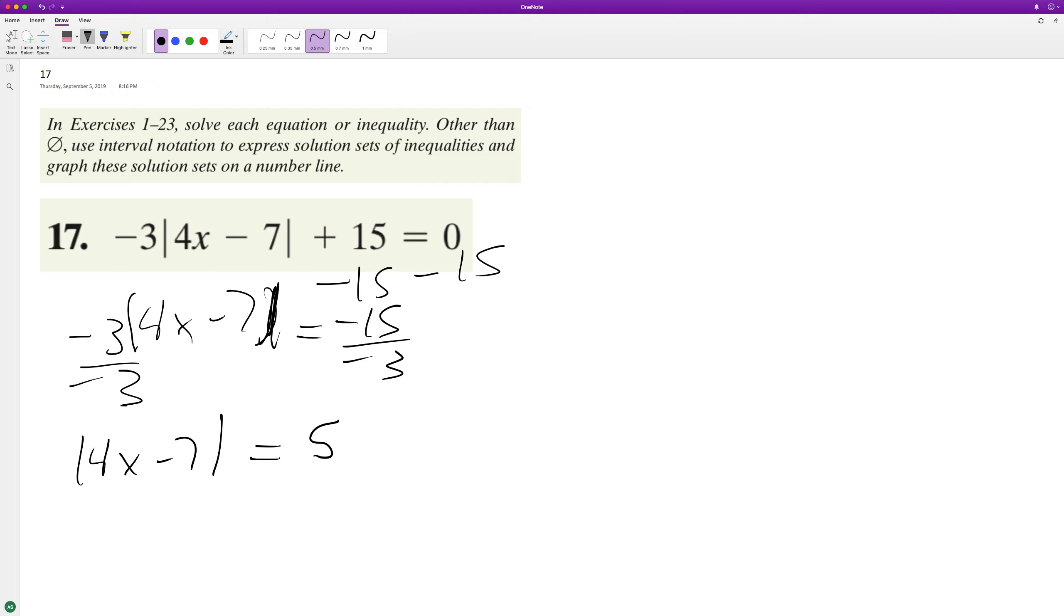Okay, now we can solve it. So we'll do it two ways. We have just our four x minus seven equals five. And then we have our negative parentheses four x minus seven equals five. Okay, add seven to both sides. We have four x is equal to 12. Divide by four. x is equal to three.